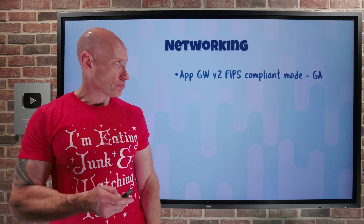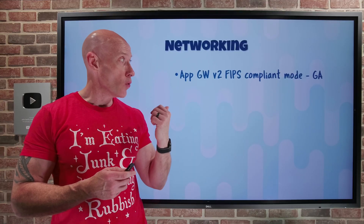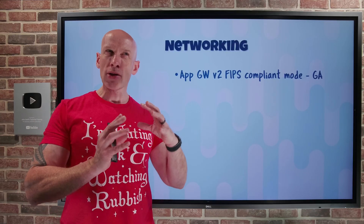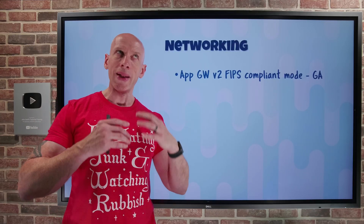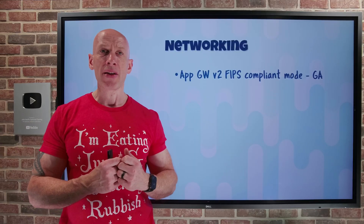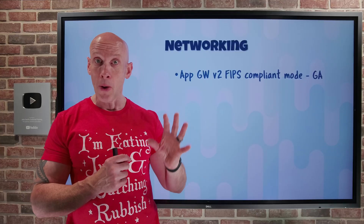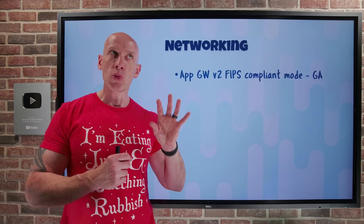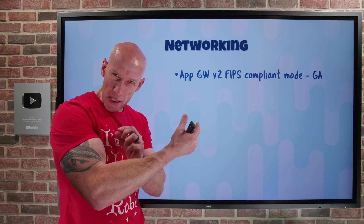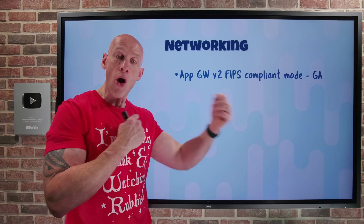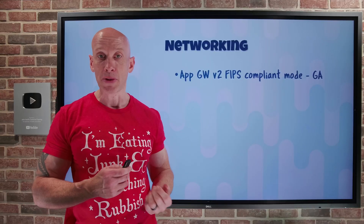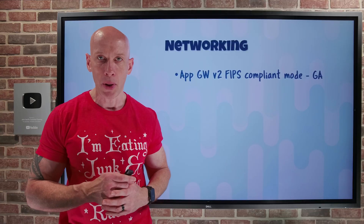On the networking side, AppGateway V2 now has a FIPS-compliant mode in GA. AppGateway is all about providing a regional Layer 7 load balancing capability — it understands HTTPS, HTTP, and also has TCP capabilities. Now I can enable a FIPS 140-2 compliance mode. That's all about the specific cipher suites you're allowed to use as part of TLS. I can turn on those policies, and it will only use the cipher suites that are FIPS-compatible, enabling you to get that compliance configuration.